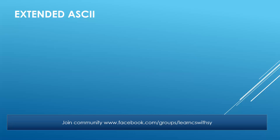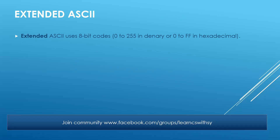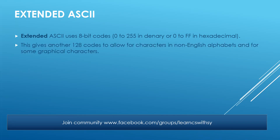Along with ASCII, we have extended ASCII. Extended ASCII is using eight bits. When it is eight bits, it means the value is going to be from 0 to 255 — or you can say 0 to FF in hexadecimal; both mean the same. Because if you have all eight bits turned on, the maximum value is 255. And 0 to 255 makes it a total of 256 values, represented by 0 to FF. With extended ASCII, that eighth bit gives additional 128 codes, allowing storage of non-English alphabets and some graphical characters.